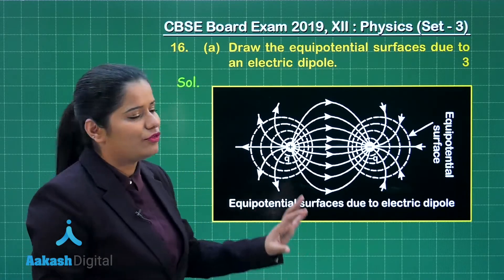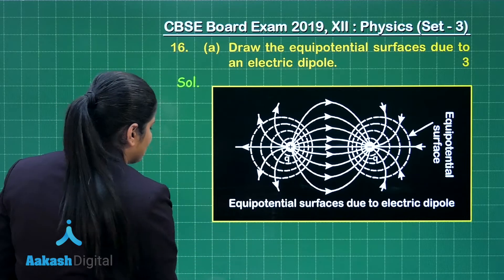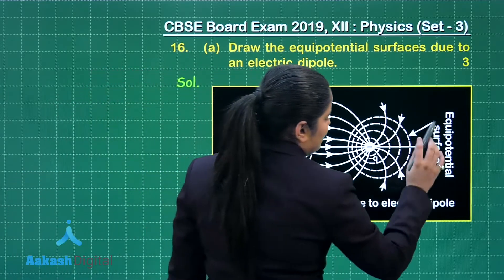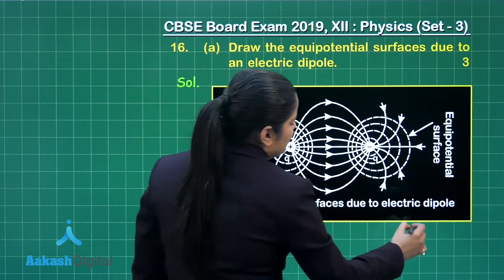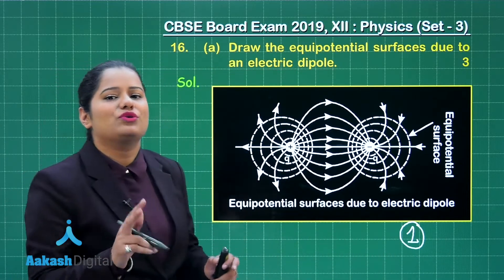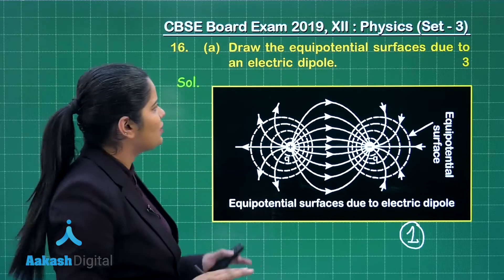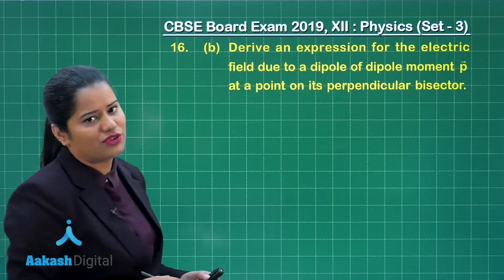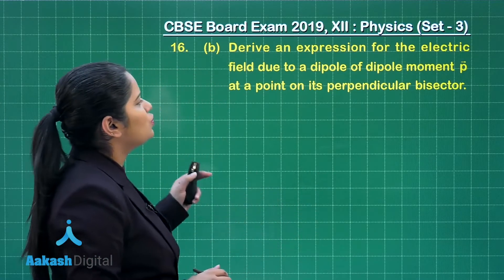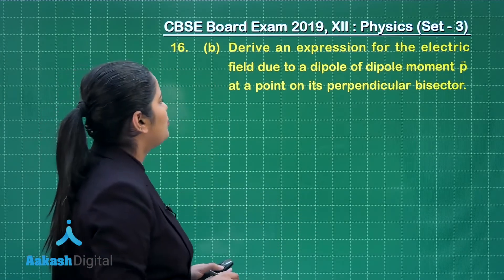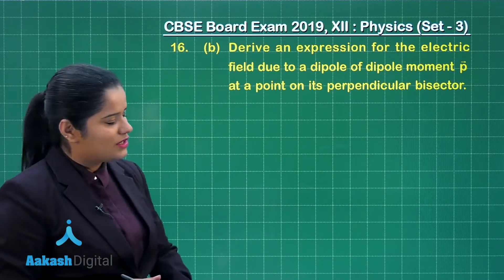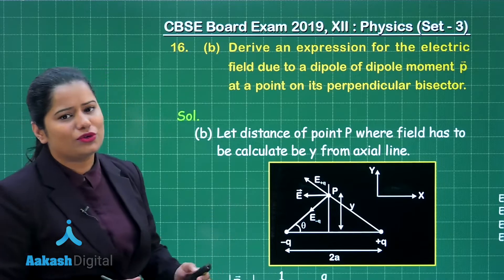This part of the question scores one mark, so when you draw this diagram neatly and clearly you will score one mark. The remaining two marks require you to answer the second part, which asks us to derive an expression for the electric field due to a dipole of dipole moment p at a point on its perpendicular bisector.